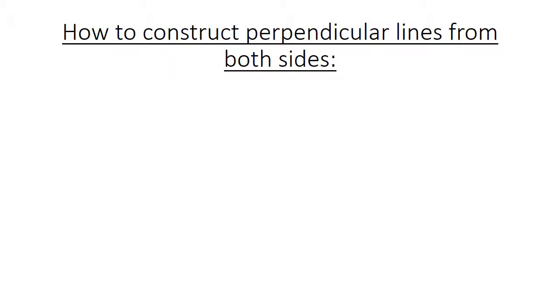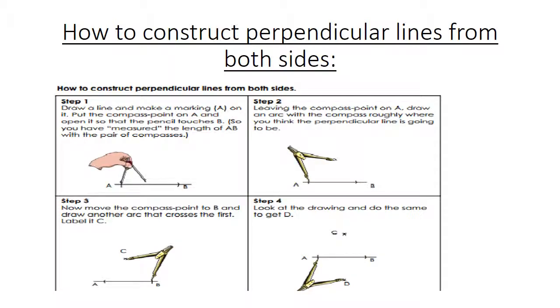How to construct perpendicular lines from both sides. Step 1: We draw a line and make a marking A there. Put the compass point on A and open it so that the pencil touches B. So you have measured the length of AB with the pair of your compass. Step 2: Leaving the compass point on A, we draw an arc with the compass roughly where you think the perpendicular line is going to be.